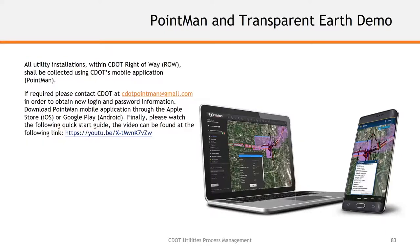PointMan Transparent Earth is a mobile app available to all at CDOT, as well as to contractors and anybody working within our right-of-way, including utility companies, construction managers, and inspectors. Everyone needs a unique login and password, provided through our email service at c.pointman@gmail.com. Just send an email requesting access and we'll send back unique credentials. The software is downloadable from the Apple Store for iOS and Google Play for Android.